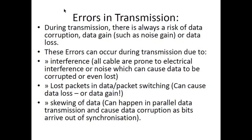These errors can occur during transmission due to interference. When signals are traveling on a cable, if there is another cable nearby, due to induced electricity or the magnetic or induction field of other cables carrying electric signals, some current can sweep into the cable carrying data signals. Because of that, you can get electrical interference or noise, and as a result your data can be corrupted or even lost.